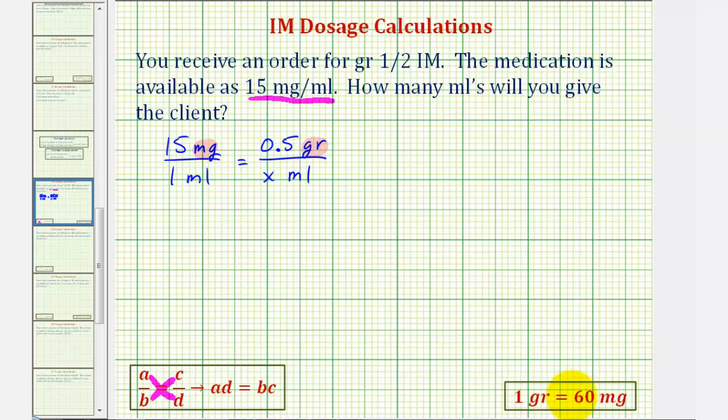In this case we can probably figure out that if one grain equals 60 milligrams, then half a grain would be 30 milligrams.